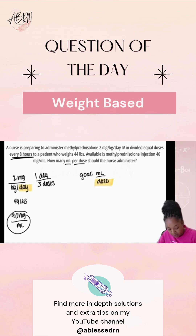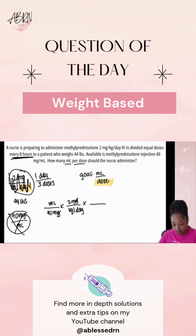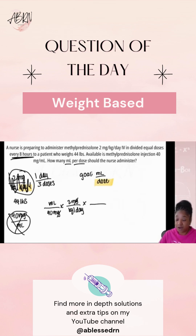We're going to take 40 mg per mL and flip it — so mL over 40. Then we have 2 mg per kg per day. The milligrams cancel out, and now I have kilograms and days at the bottom. Do I have kilograms in my puzzle pieces? No. So when I don't have what I need, we convert. 1 kg is equal to 2.2 pounds.